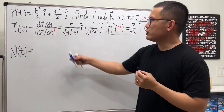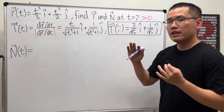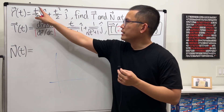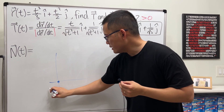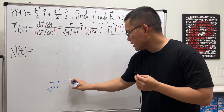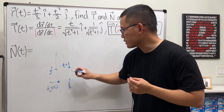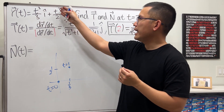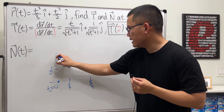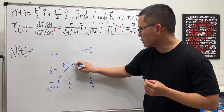First, I'm going to sketch the curve quickly, because we need to know how the curve is traveled — the orientation. When t equals 0, we get (0, 0), so we start at the origin. When t equals 1, we have (1/3, 1/2). When t equals 2, we have (8/3, 2). So the curve travels from the origin outward, and you can see its shape and concavity.